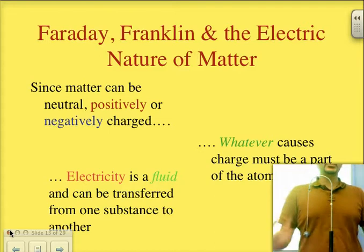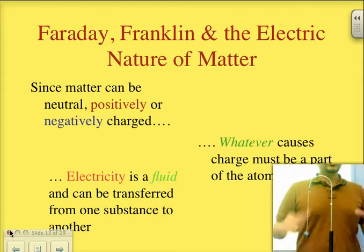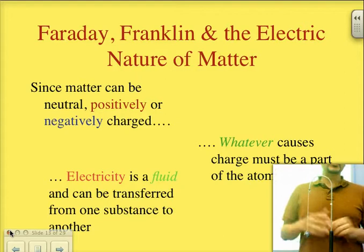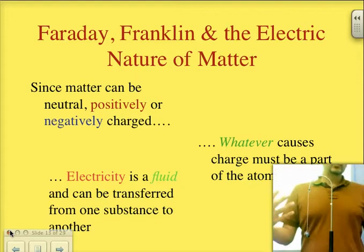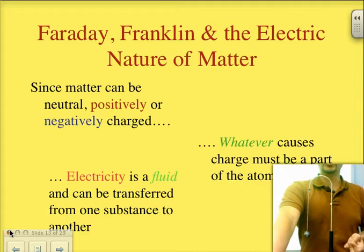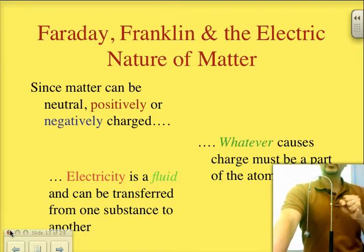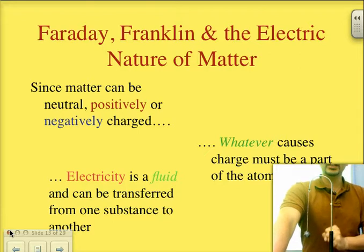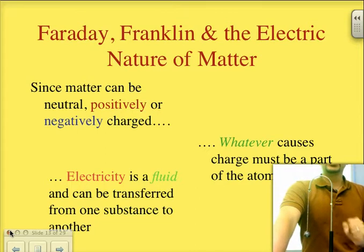We know that this is because of electrons, yet in the time of Franklin, he did not know that. He just knew that it was some type of fluid, something that could move. This is the big problem with the Dalton atom: it required the atom to be solid and indivisible, yet the fact that the atom can be electrically charged — positively or negatively — means that there are subatomic particles that make up this atom.